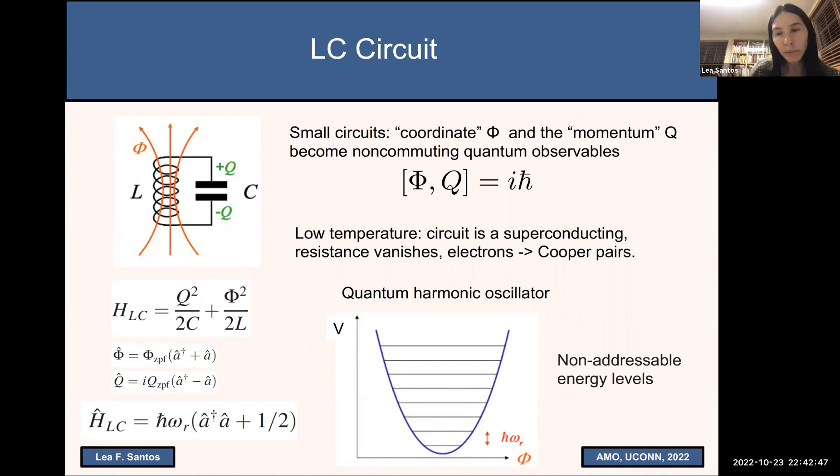But for people who are trying to use these circuits to build quantum computers, well, this is not the best choice. Why? This kind of circuit is not a good quantum bit, qubit. Why? Because in a qubit, we want to play with two levels, we want to manipulate two levels. And we want to have control over these two levels. But here, any pair, any two adjacent levels have the same spacing, the same energy difference. So we do not have control over two only. So these energy levels are not addressable.